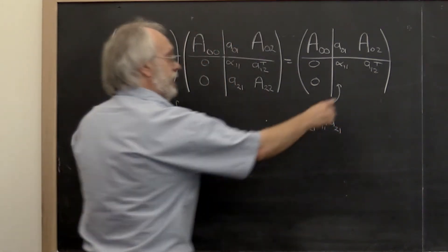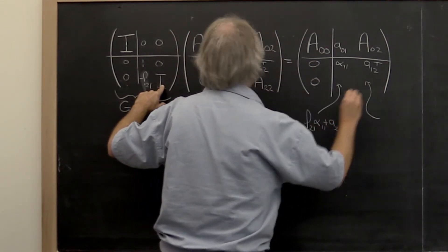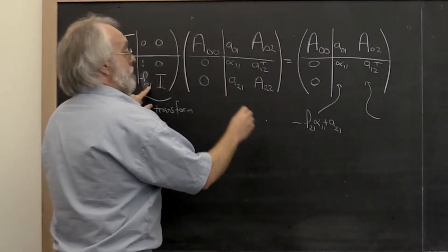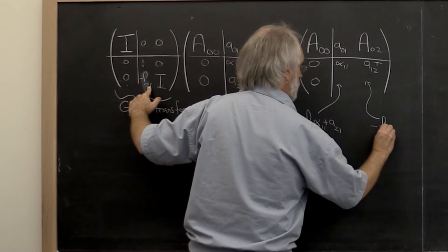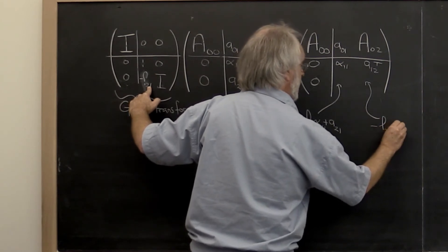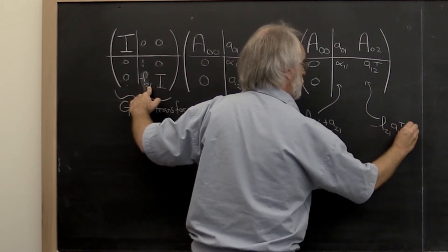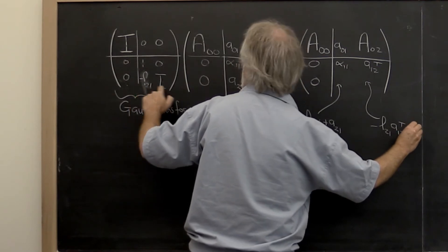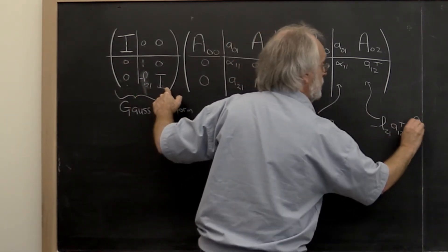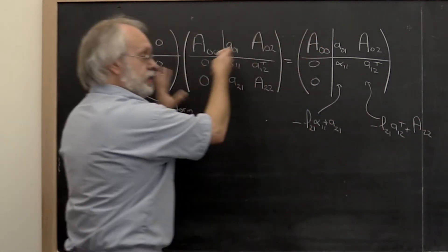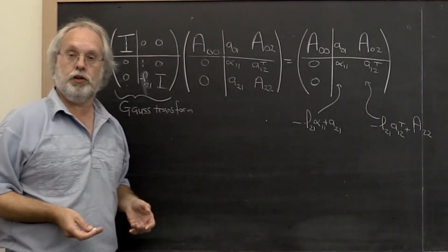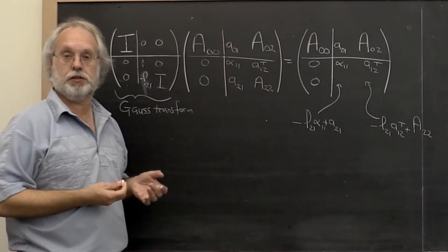And then this right here becomes minus L21 times A12 transpose plus A22. And you can just check that for yourself. By now you should be very familiar with how to do partition matrix matrix multiplication.